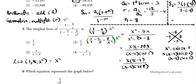The (x minus 4) cancels out, so your final answer is x over (x plus 2). Our answer is option number 2.